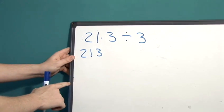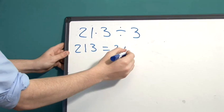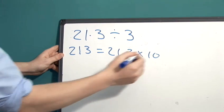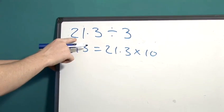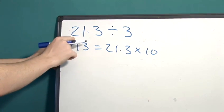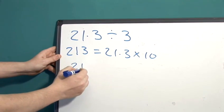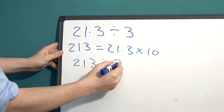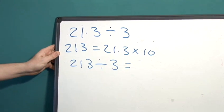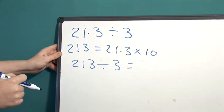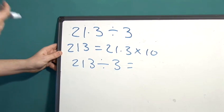213 is 21.3 multiplied by 10. So if we just pretend that this is 213 and divide it by 3, it makes our problem a lot less difficult.